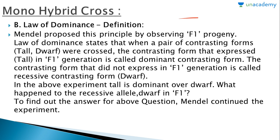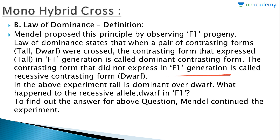The law of dominance: Mendel proposed this principle by observing F1 progeny. It states that when a pair of contrasting forms — such as tall and dwarf — are crossed, the contrasting form that is expressed in the F1 generation is called the dominant form (tall), and the contrasting form that is not expressed in F1 is called the recessive form (dwarf). In this experiment, tall is dominant over dwarf. The question then arises: what happens to the recessive allele (dwarf) in the F1 generation?